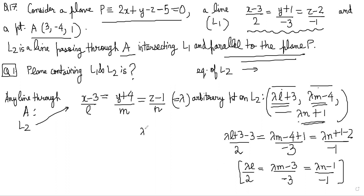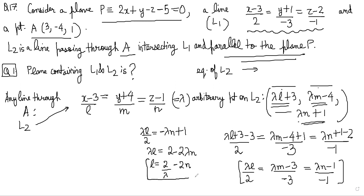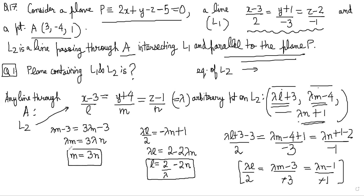From these results: λL/2 = −(λN + 1), so λL = 2 − 2λN, meaning L = 2/λ − 2N. Similarly, from (λM − 3)/(−3) equated to the same expression, we get λM = 3λN, so M = 3N. This is the second condition.